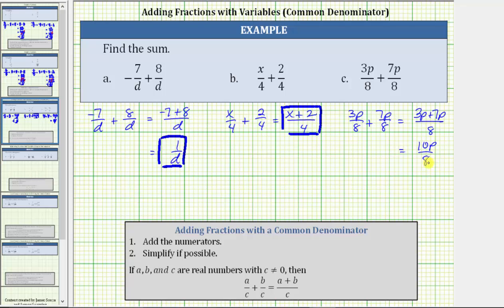But this fraction does simplify because eight and ten share a common factor of two. To show the common factor of two, let's write ten as two times five and eight as two times four.